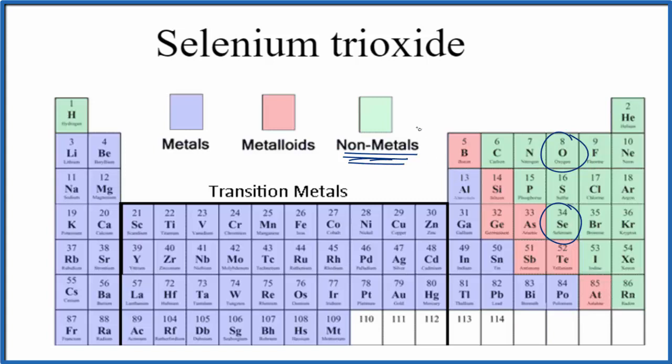So two nonmetals gives us a molecular, it's also called a covalent compound. And with these molecular covalent compounds, we need to take into account the prefixes when we write the formula for selenium trioxide.